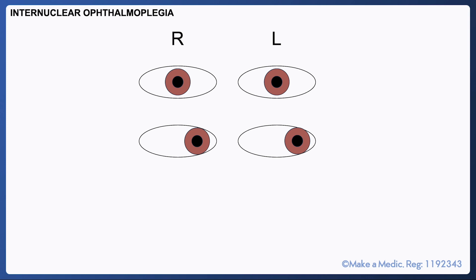In the case of INO affecting the left MLF the patient will be able to look to the left without any issue. However when they look to the right their left eye is no longer able to adduct. This is because there is no longer a connection between the right abducens nucleus and the left oculomotor nucleus. You will also likely see some beats of nystagmus in the right eye.